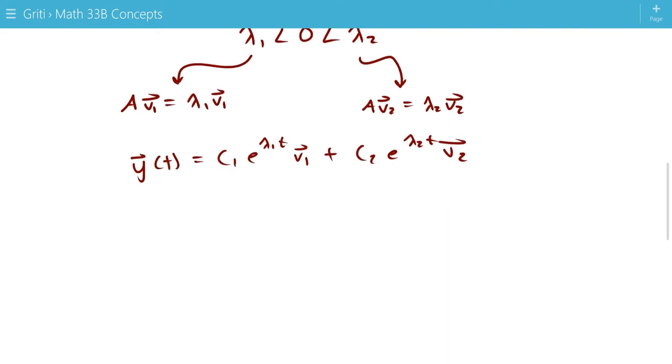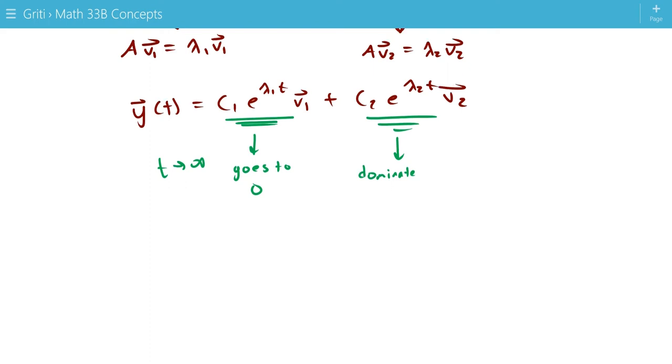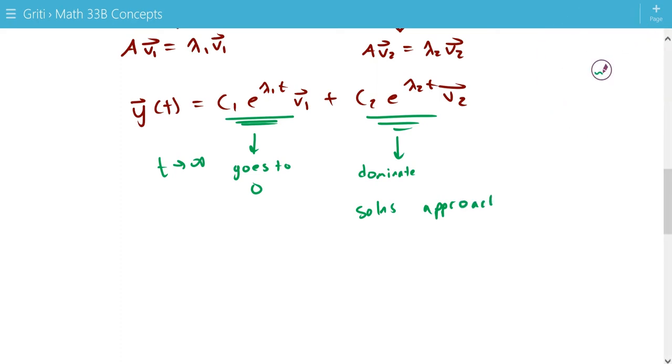As t approaches infinity, since this is a negative exponential, this goes to 0. And this, since it's a positive exponential, will grow very rapidly. So this will dominate. Solutions approach C2 e^(lambda2 t) V2. They approach some scalar multiple of V2.